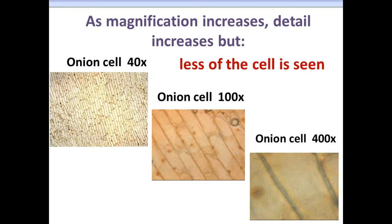Here is a slide of an onion skin. You can see many small onion cells using the scanning objective lens. While you can only see portions of the cell under high power, you can see more details such as nuclei and cell walls and other organelles.